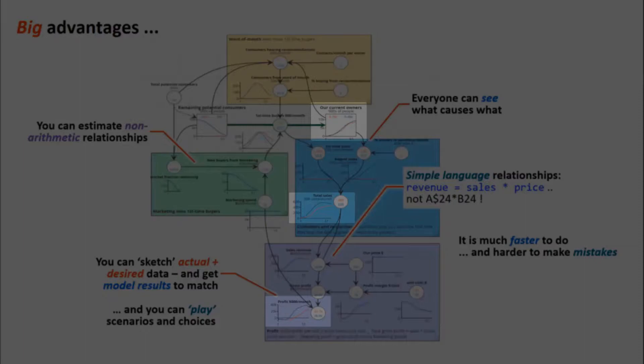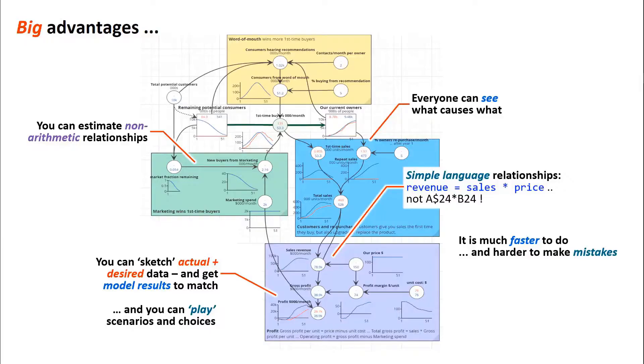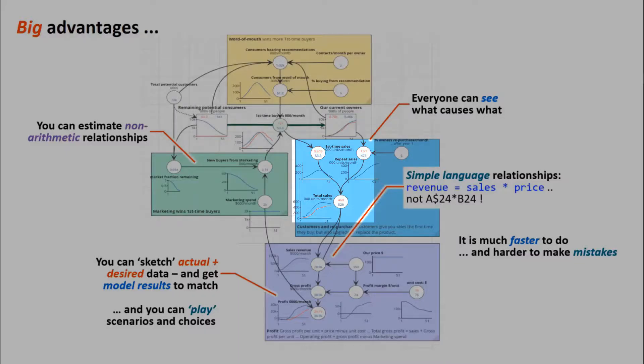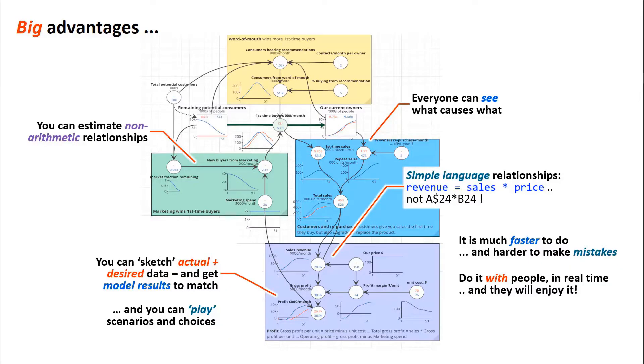If the blue line doesn't match the red line, there's a problem. It's also hard to make cell reference errors because everything calculated from something else is connected by arrows. You can't even make a cell reference error in the first place because you can only use things that actually are connected. You can do this with people because it's so fast—you can do it in real time. You can be having the meeting and actually constructing this model as you're having the discussion, and they will actually enjoy doing it with you as well. This is much more fun than peering at obscure spreadsheets.